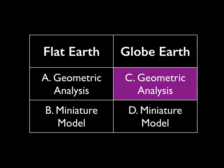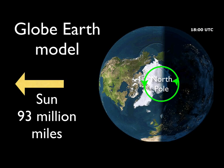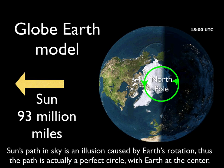Now let's turn our attention to the globe Earth, starting with a geometric analysis. On the globe Earth model, the Sun is 93 million miles away, so the Sun doesn't really trace a path in the sky — this is an illusion caused by the rotation of the Earth. In one day, the Sun's not really moving; the Earth is turning towards it. So the actual path of the Sun is literally a perfect circle with the Earth at the center — a circle, not an oval. That's an important distinction.